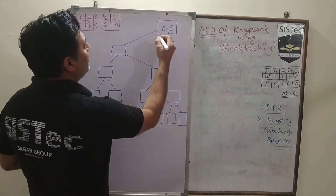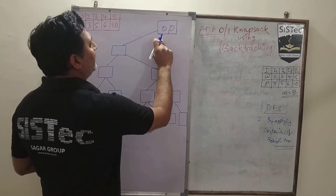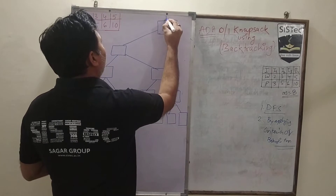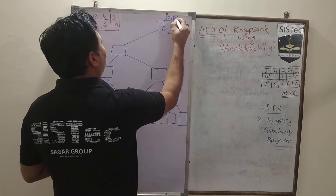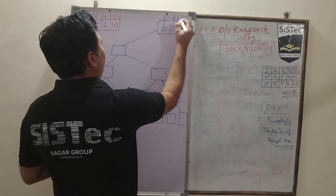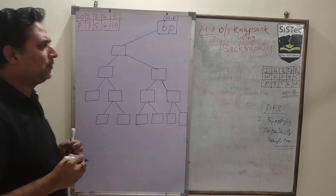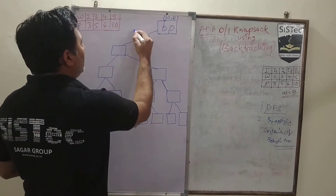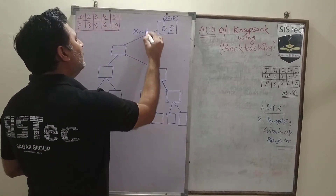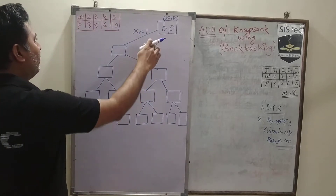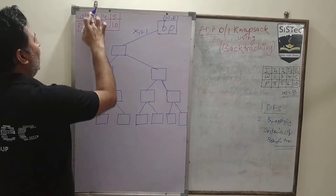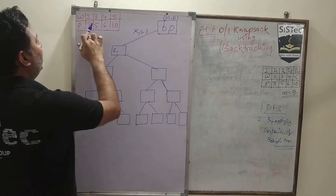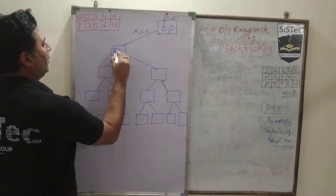Initially we will consider no weight, that's why we have no profit. We can consider it like a W, P vector. We will explore and consider the first weight. When we consider the first weight, the weight value will be 2 and the profit will be 3.